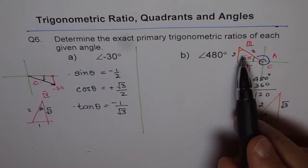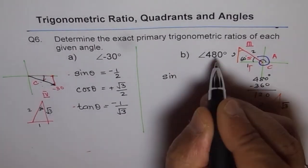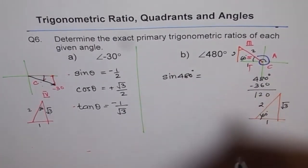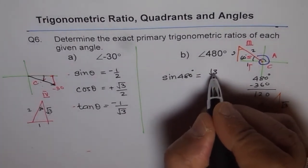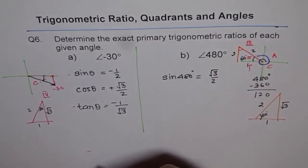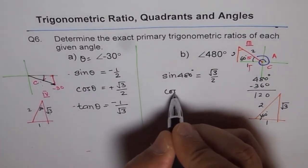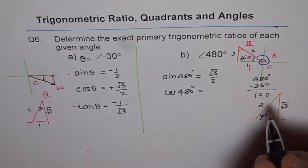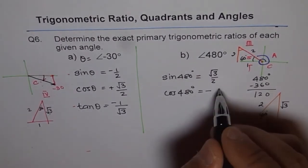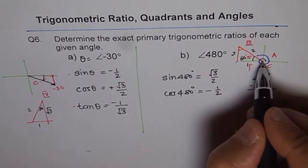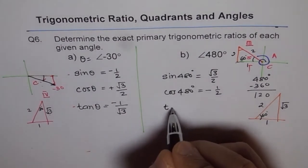Since we are in quadrant 2, sine is positive, all others are negative. So we get sine of 480 degrees equals opposite over hypotenuse, square root 3 over 2, and that is positive. Cos of 480 degrees is negative because we are in this quadrant, negative 1 over 2. If you look at this triangle, x value is negative and y is positive. That is the reason why sine is positive and cos is negative.